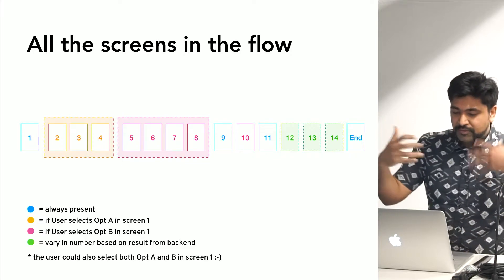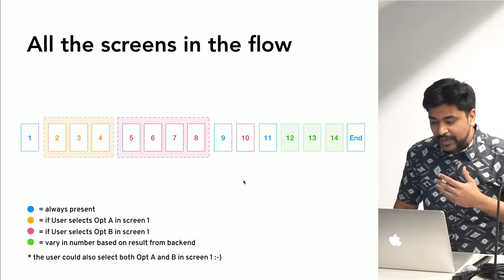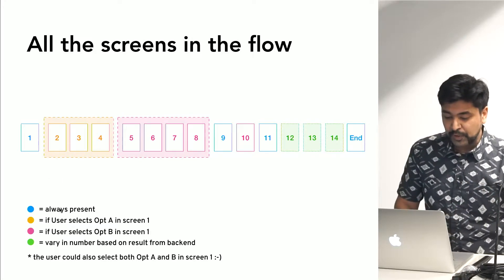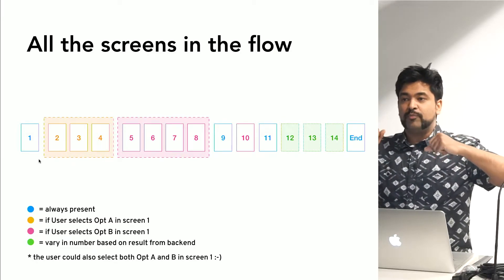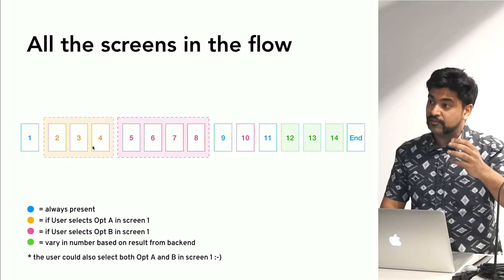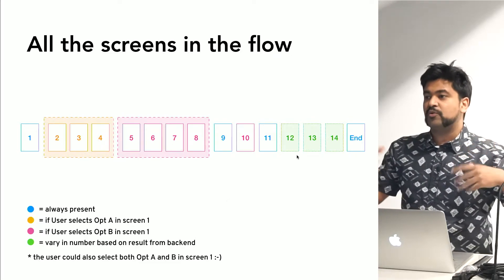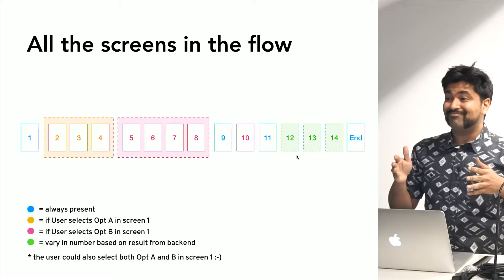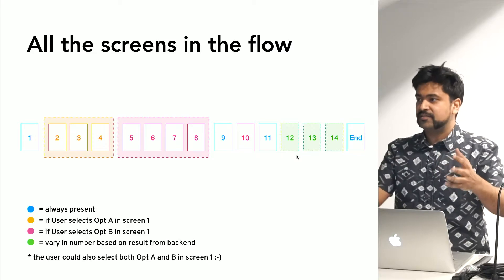To explain the challenge at hand, let's imagine we had about 15 screens in the app. Screens encoded in blue would always be shown. On the first screen you were presented with three options: if you chose option A, you would see only the yellow screens; if you chose option B, you would see only the pink screens. And the green screens were what the back end decided to show you. So this was, back in 2016, the original idea the business people had.